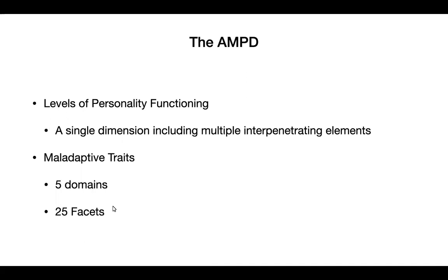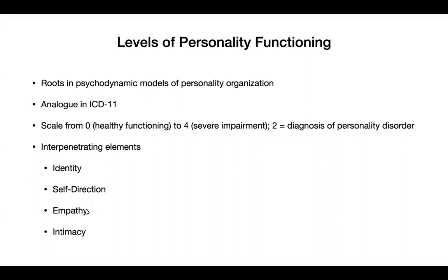So that's what the DSM-5 was trying to do: use continua, arrange them using evidence, and then try to separate dysfunction and traits. The model has two parts. Criterion A is called the Level of Personality Functioning — a single dimension of overall psychiatric or personological severity with multiple interpenetrating elements. Separate from dysfunction are maladaptive traits: five domains that look very similar to the five-factor model and 25 facets that allow for more specific articulation of the person's personality.